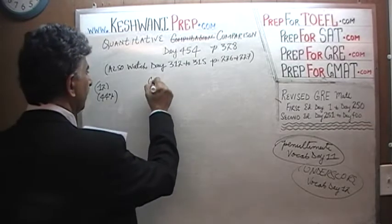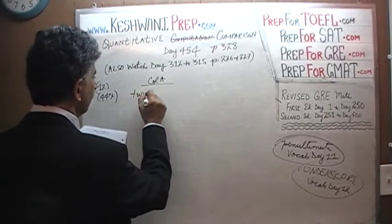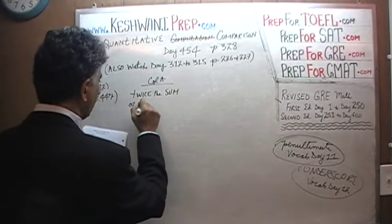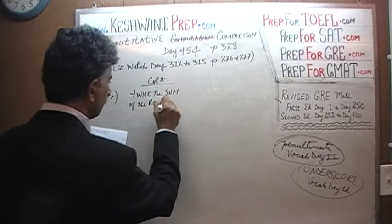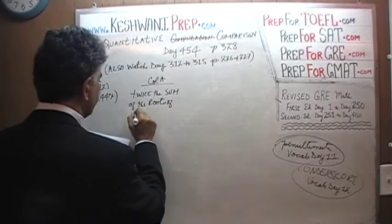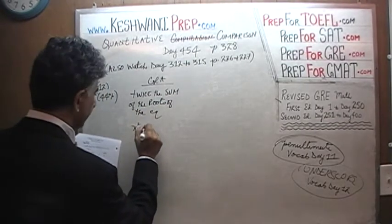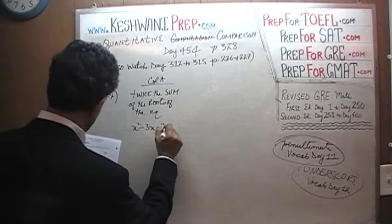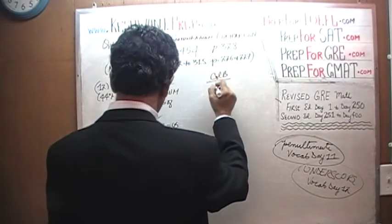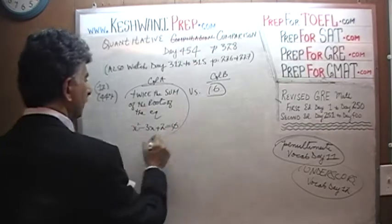Here is what the problem says. In column A we have twice the sum of the roots of the equation x squared minus 3x plus 2 equals zero. And in column B we have a quantity of 6.